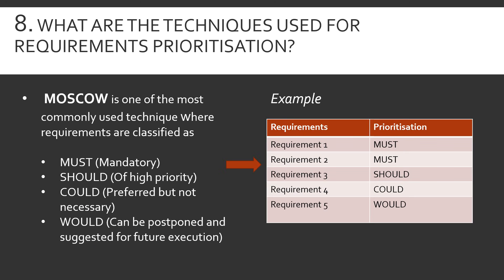Question number eight: what are the techniques used for requirement prioritization? This is a key skill for a BA — how they negotiate and get requirements prioritized for the engineering team. There is always limited time and budget, and requirements with the highest business value should go through first. The first technique is MoSCoW, which stands for Must, Should, Could, and Would. You set up a prioritization call with the business and list the priority for each requirement.